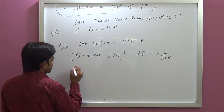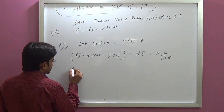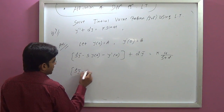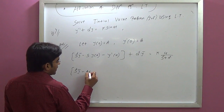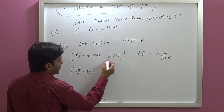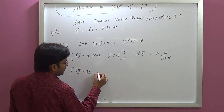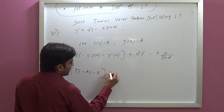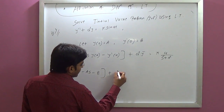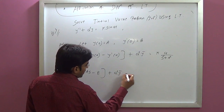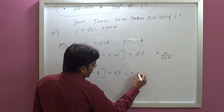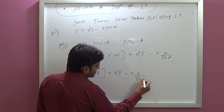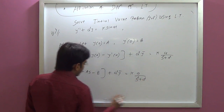Second step: s-squared·Y-bar, and y(0) equals a, so minus s·a minus y'(0) which is b. Plus a-squared·Y-bar equals k·a over s-squared plus a-squared.